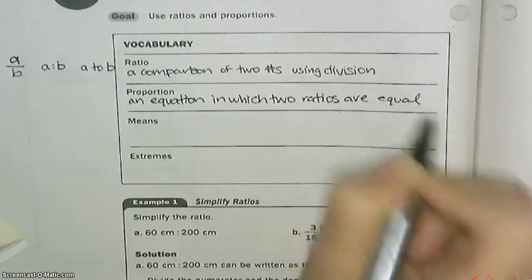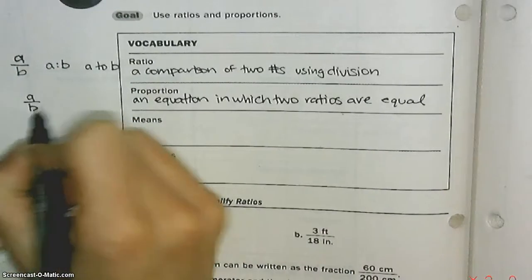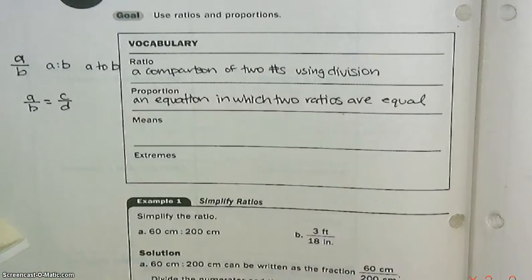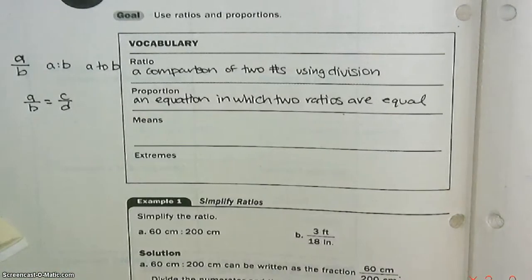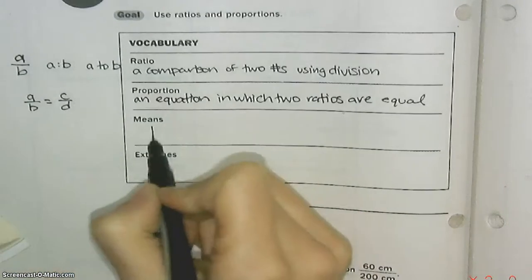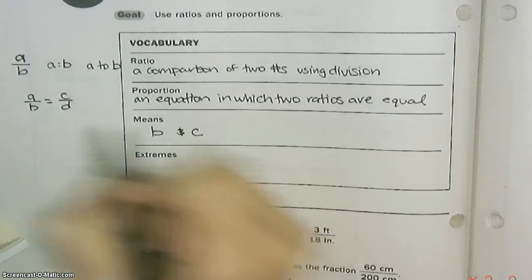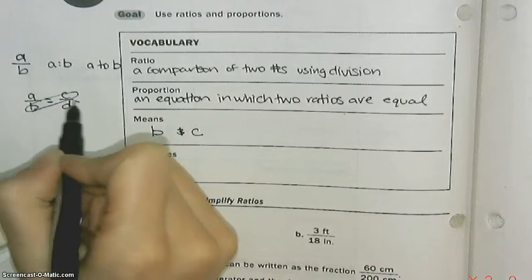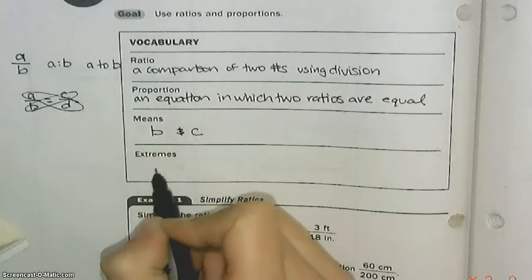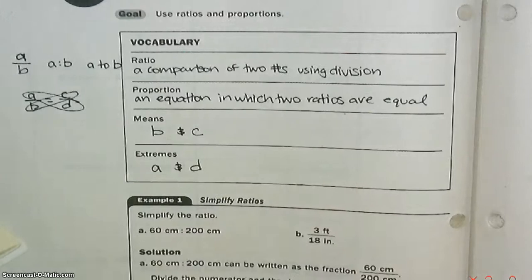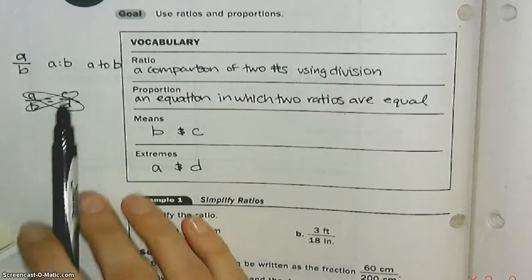A proportion is an equation in which two ratios are equal. Here's one ratio equal to another ratio. B and C are called the means, and A and D are called the extremes. And we're going to talk about what you can do with the means and the extremes.